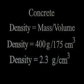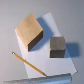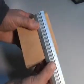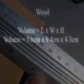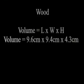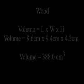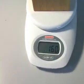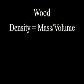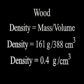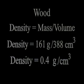We will calculate the density of our wood block using the same method. Measure length, width, and height, then multiply to determine the volume. This wood block has a volume of 388 cubic centimeters. The digital scale tells us this block has a mass of 161 grams. Inserting the numbers into the density formula, we determine that this wood block has a density of 0.4 grams per cubic centimeter. I rounded the results to one decimal place.